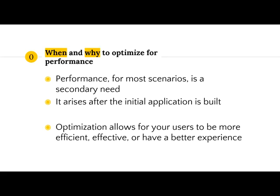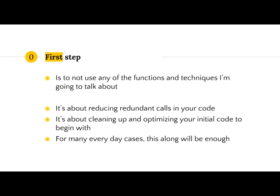The first step when it comes to optimization is not to use any of the techniques I'll talk about today, but to go through your code and realize whether you have redundant calls going on, or to clean up your code to make it run more effectively. Oftentimes a lot of the slowness in a program is simply a result of poorly written code which served its purpose but wasn't performance-driven. It's just making sure you're not calling a function a hundred times when you only need to call it once. For most cases, that alone is going to be enough.